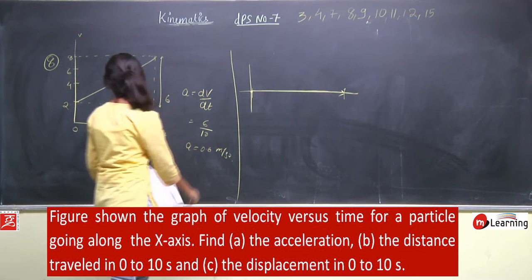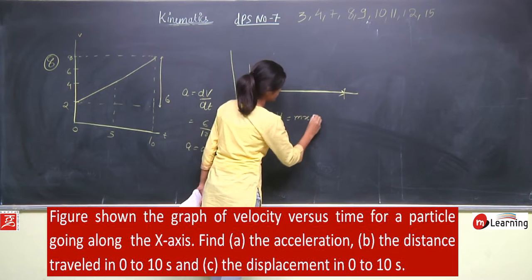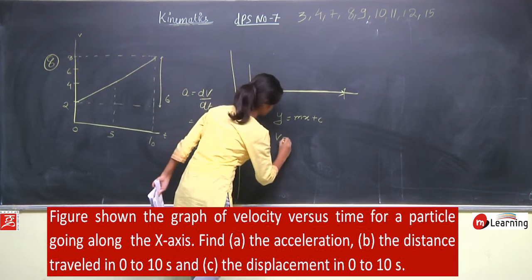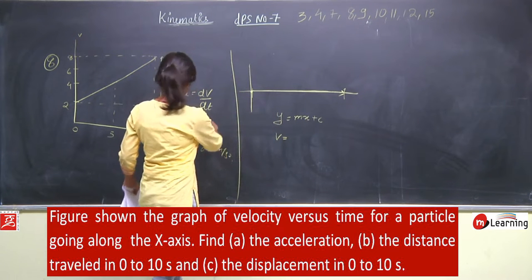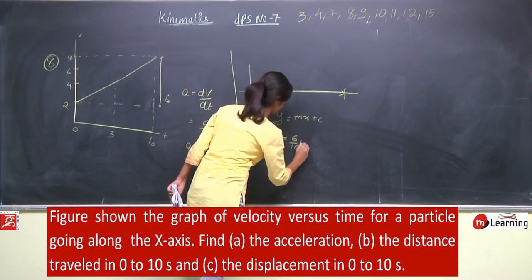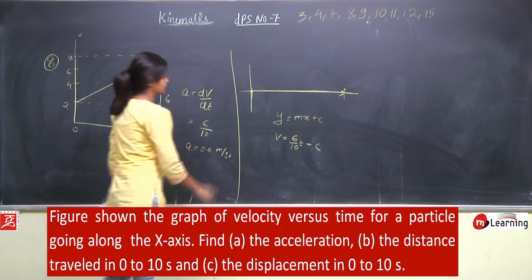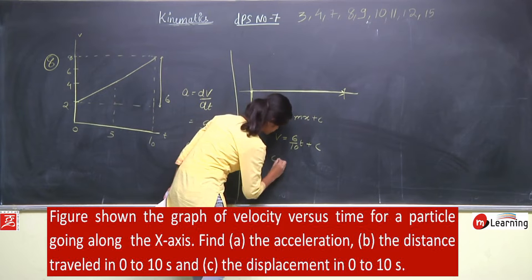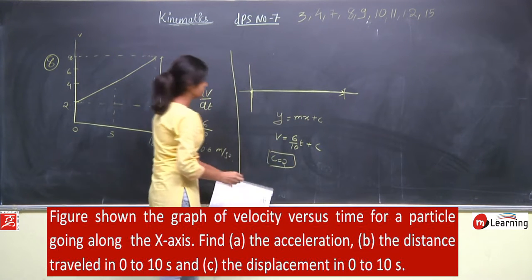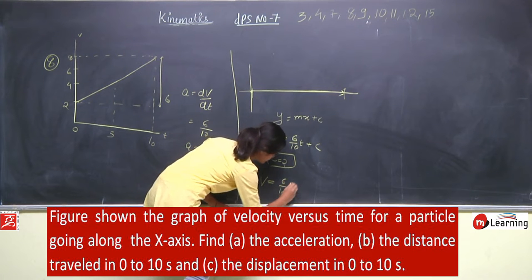दूसरा तरीका: इसकी equation लिखते हैं। Straight line की equation होती है y = mx + c. y-axis में v है, slope है 6 by 10, x coordinate में time है, plus constant c. At t = 0, velocity 2 है, तो constant की value 2 आ जाएगी। Equation बन जाएगी: v = (6/10)t + 2.